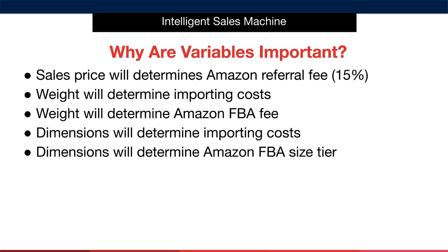The dimensions of an individual fully packaged item determine the importing costs for products brought in by sea freight — when items are shipped in a container to the destination. Air freight costs are driven by weight, whereas sea freight costs are determined by how much space the item takes up in a container. Dimensions also determine Amazon's FBA size tier, and the size of an item determines how many pieces fit in a carton. Every carton sent into Amazon must have the exact same number of units in each one.